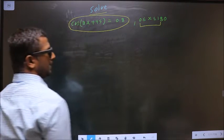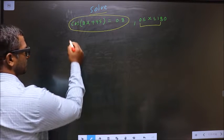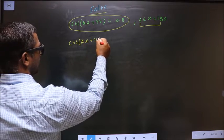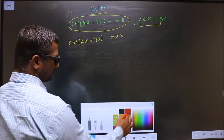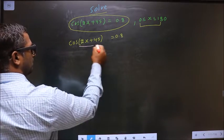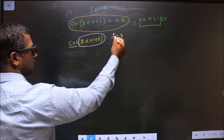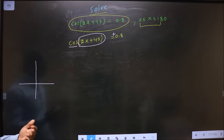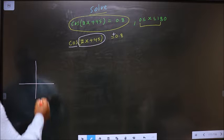First, the given equation is cos(2x + 45) = 0.8. Now to get the values for this, here we have cos and it is positive, so you should check in what quadrants is cos positive. It's all silver tea cups: cos is positive in the first and in the fourth.